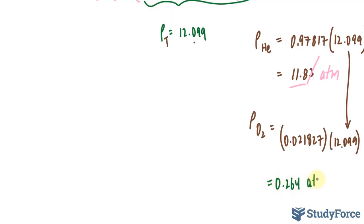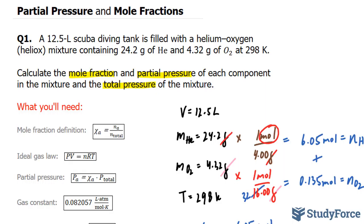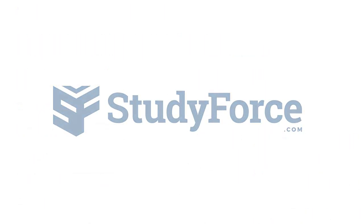And one more time, the partial pressure of oxygen gas is equal to the same number, 12.099 multiplied to its chi value, which is right here. Let's write that down. And remember, this should be three significant figures. So 12.099 times 0.021827. This gives us 0.264, 0.264 atmosphere exerted by oxygen alone. And there you have it. That is how to calculate partial pressure and mole fractions.